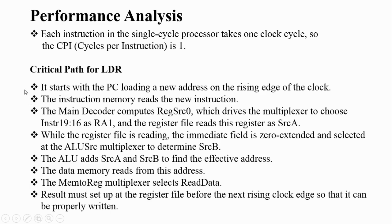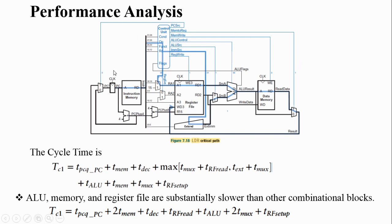We are going to examine the LDR instruction and its critical path. The critical path is the path through which the data will be flowing during execution of the instruction — from the starting of execution at the PC all the way to writing back the result. In the case of load, you are reading data from memory and writing it back to the register file. The instruction starts with the program counter, moves through the path shown in blue, and finally the result is returned to the register file.